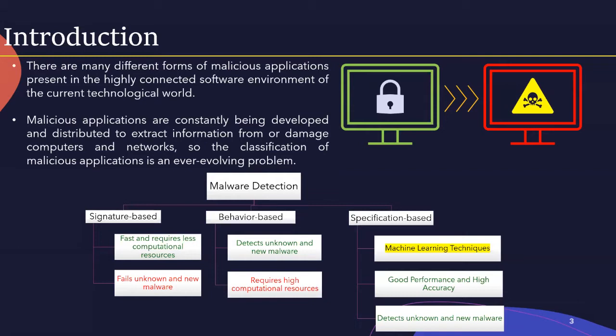Behavior-based techniques analyze various features such as source or destination of malware, types of attachments, and other countable statistical features. They can detect both known and unknown malware, but require more computational resources like memory and CPU time. Specification-based detection is actually a behavior-based detection approach that tries to overcome the disadvantages of other techniques. Researchers have employed data mining and machine learning techniques and obtained good performance in malware detection and classification with high accuracy. These methods provide reliable and accurate results, especially for classifying metamorphic malware.